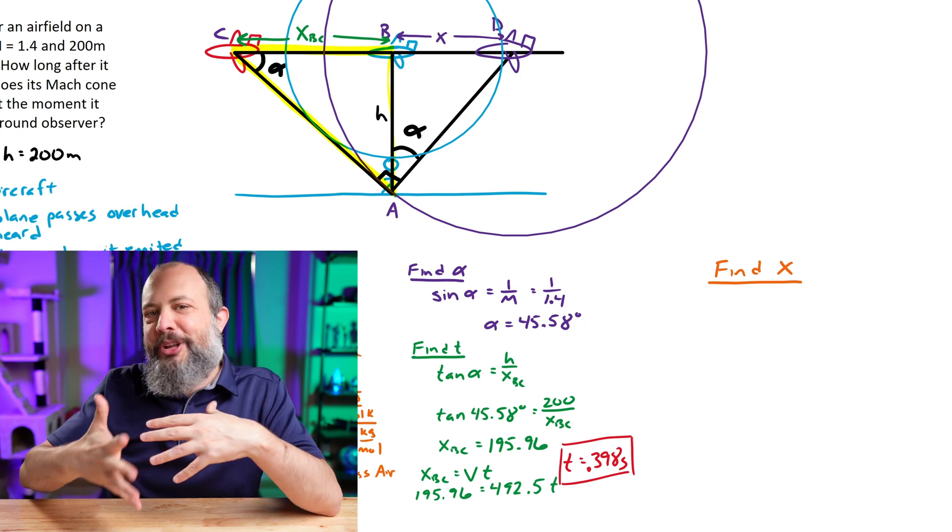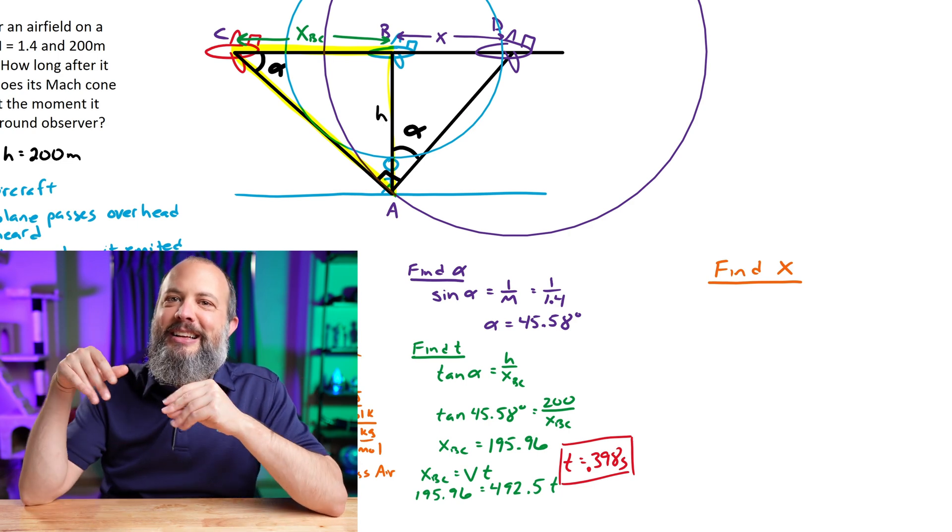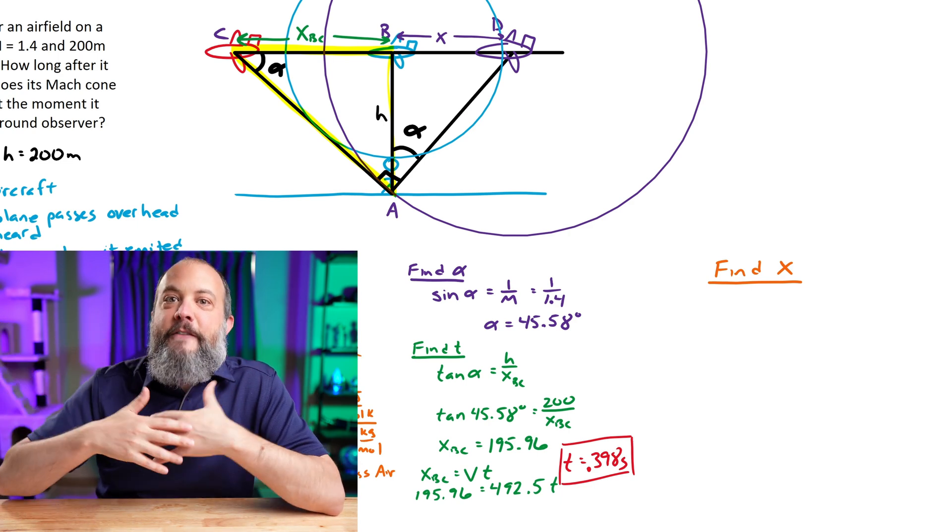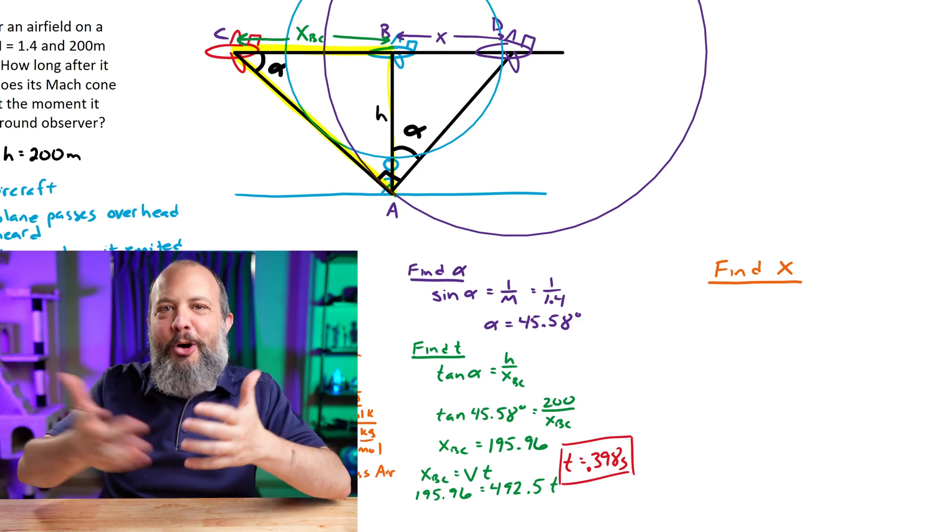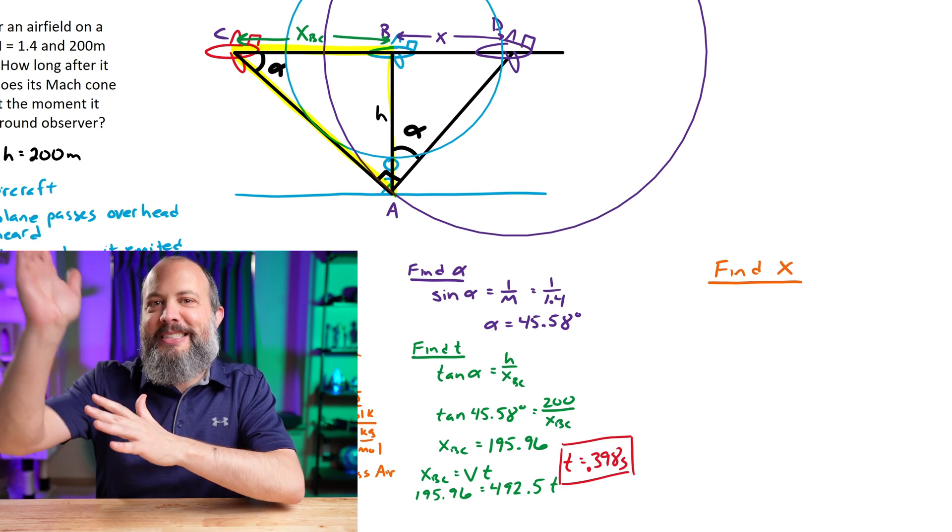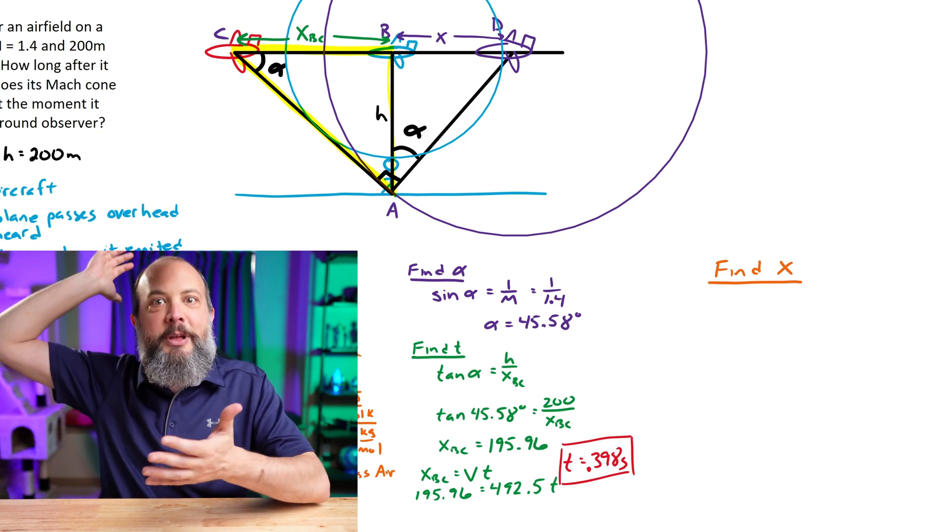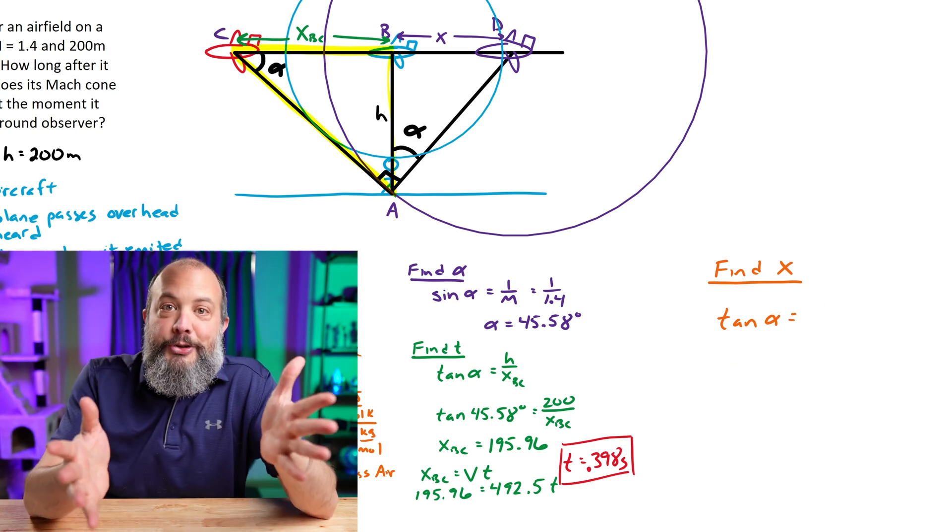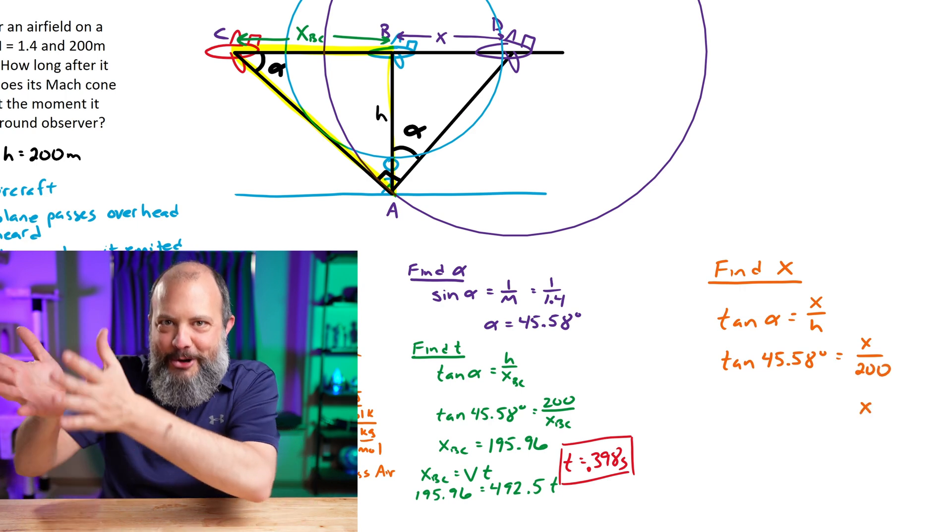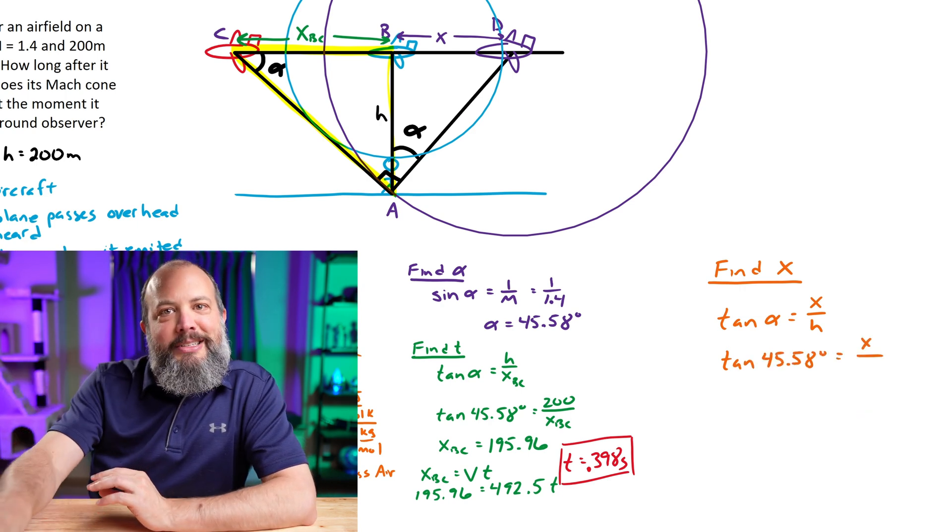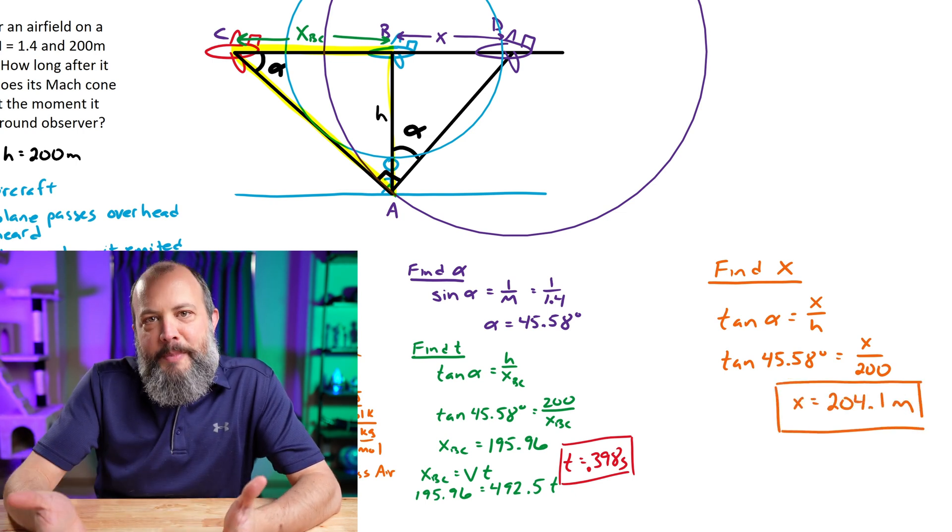This is what's really bizarre and interesting about supersonic travel and the Mach cone is that since the plane is traveling faster than the speed of sound, you essentially don't even hear the plane until it has already passed you by. When you look up and see the plane in the red position, you actually hear the sound coming from behind you from that purple position. We've got another triangle using that same angle alpha. Tangent of alpha is equal to X divided by H and we get an X value of 204 meters.